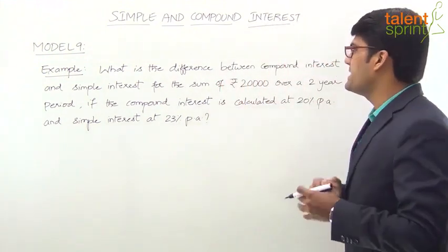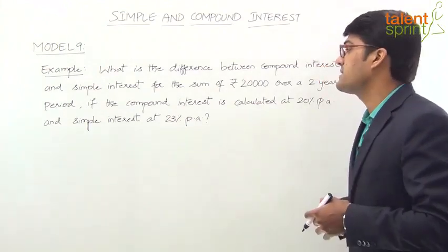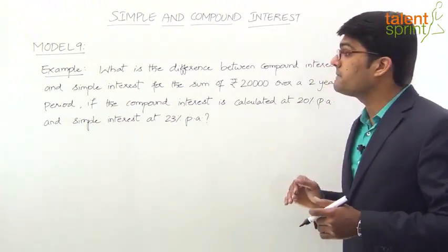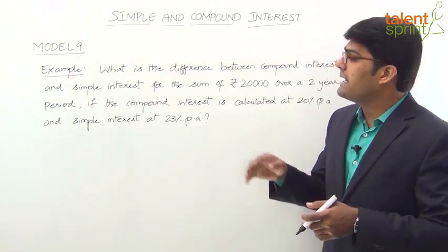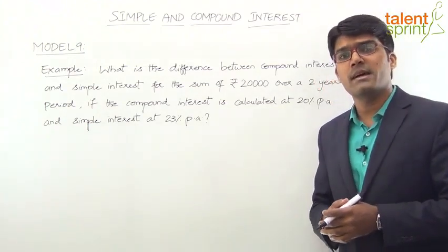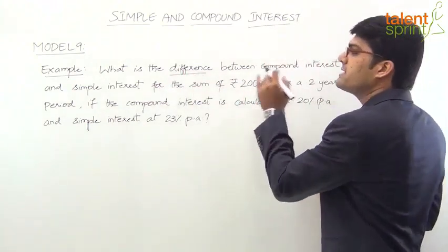What is the difference between compound interest and simple interest for the sum of rupees 20,000 over a two-year period if the compound interest is calculated at 20% per annum and simple interest at 23% per annum? Basically, if you look at the question, we have to calculate the difference in compound interest and simple interest.